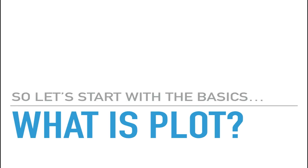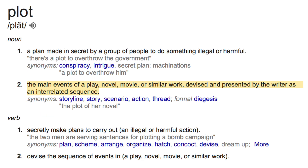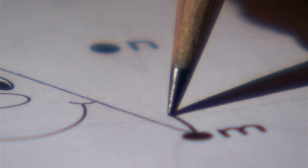What is plot? I encourage you, especially in the early stages of writing, to look up any terms you aren't familiar with. Plot is the main events of a novel devised and presented by the writer as an interrelated sequence. The key word here is interrelated — meaning these main events need to relate or connect to one another in some way.